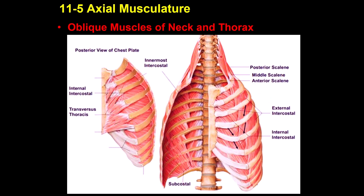Another muscle that is activated during exercise or disease is called the scalene muscles. There are three of them, and they cause elevation of the ribs. This is a muscle discussed at the beginning of the lecture as well. So these two groups — external intercostal and scalenes — are for inspiration.